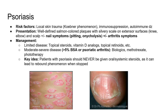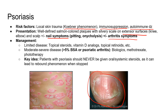Psoriasis is another high-yield derm condition. Risk factors include local skin trauma — called the Koebner phenomenon — immunosuppression, and a history of autoimmune disease. Presentation: well-defined salmon-colored plaques with silvery scale on extensor surfaces, often the knees or elbows, and can also affect the scalp. Additional symptoms include nail changes — pitting or onycholysis — or arthritis. Psoriatic arthritis, along with ankylosing spondylitis, IBD, and reactive arthritis, are inflammatory arthropathies associated with HLA-B27 positivity.